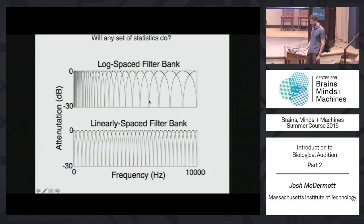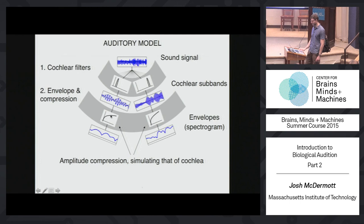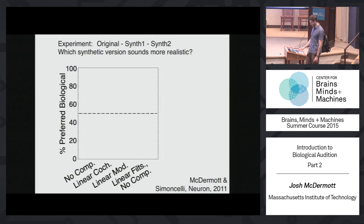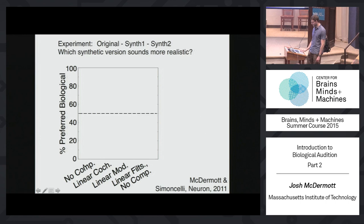Similarly, we can ask what happens if we get rid of the nonlinear function applied to the amplitude envelope and make the amplitude response linear instead. We did this experiment: we could change the auditory model, measure statistics from that model, synthesize something from those statistics, and ask whether they sound any different. We would play people the original sound, and from that sound, we had two synthetic versions — one generated from the biologically-plausible model, one altered in some way — and asked which sounds more realistic.